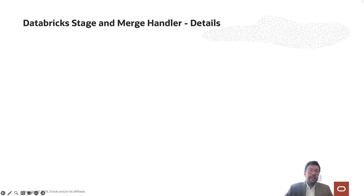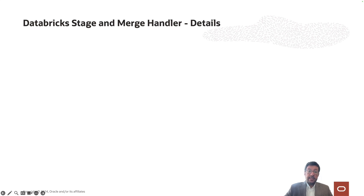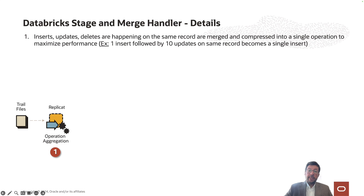Let's have a closer look at the stage and merge data flow design. Stage and merge is a real-time micro-batch process where you can control the batch windows based on your requirements. It provides the highest throughput with the minimum impact on target systems. There are three main steps. As the very first step, GoldenGate runs an operation aggregation, where inserts, updates, and deletes happening on the same record are merged and compressed into a single operation.